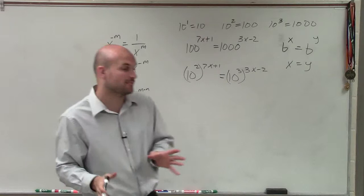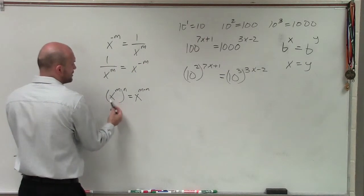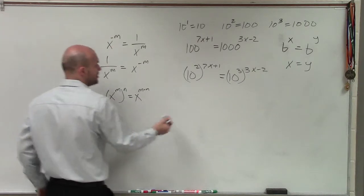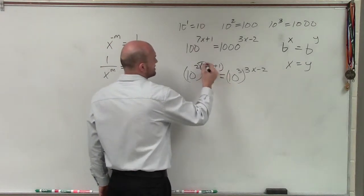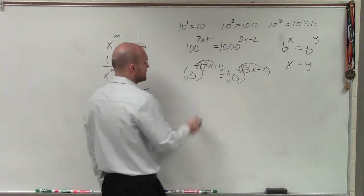All right, now before I use my 1 to 1 properties, I need to remember that when I have an exponent raised to another exponent, I'm going to multiply them. Since these are two binomial expressions, I need to put parentheses around there and apply distributive property.